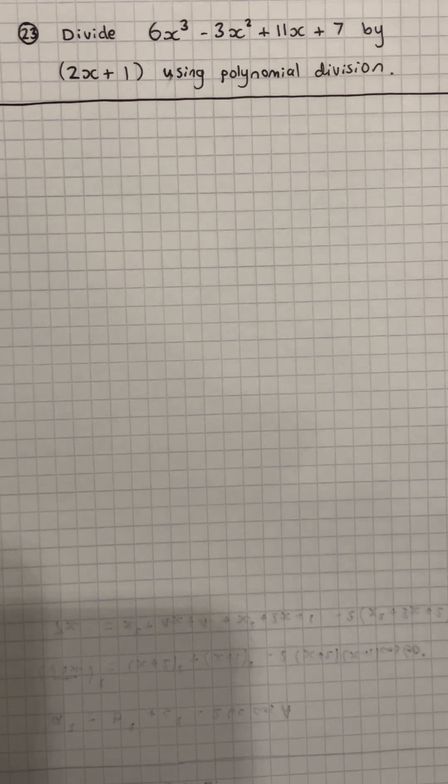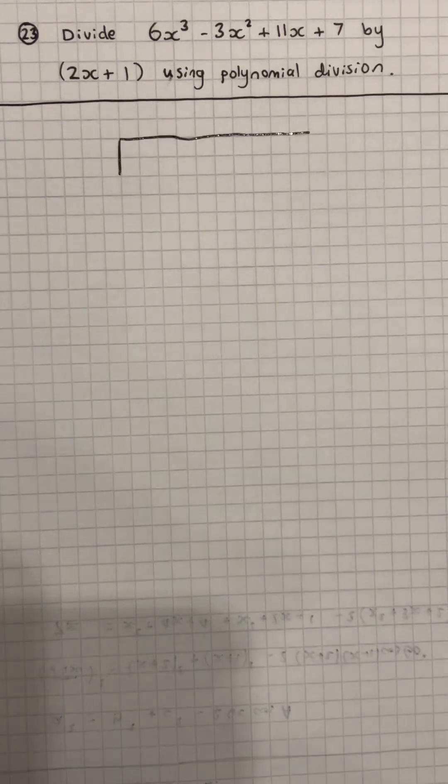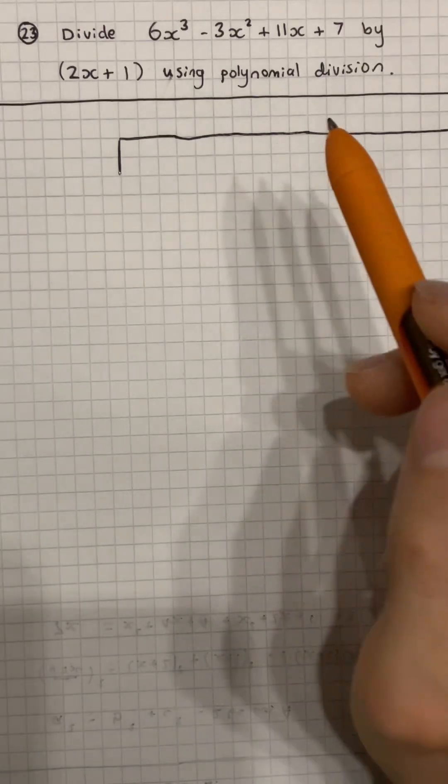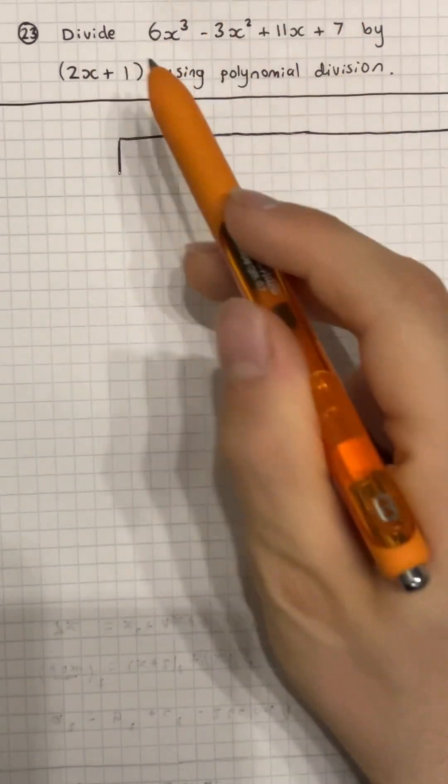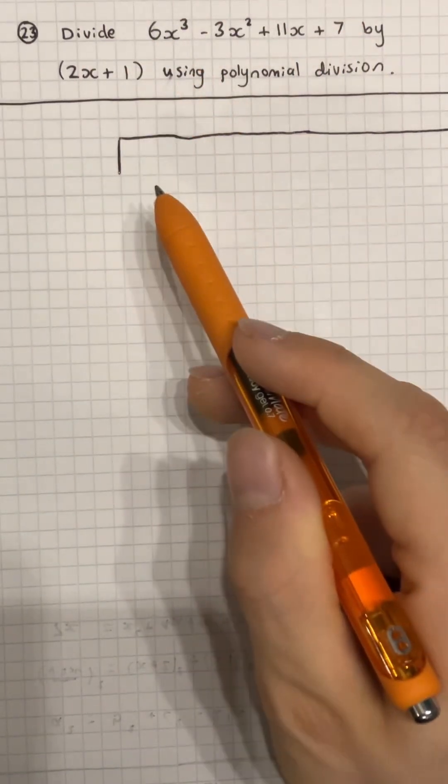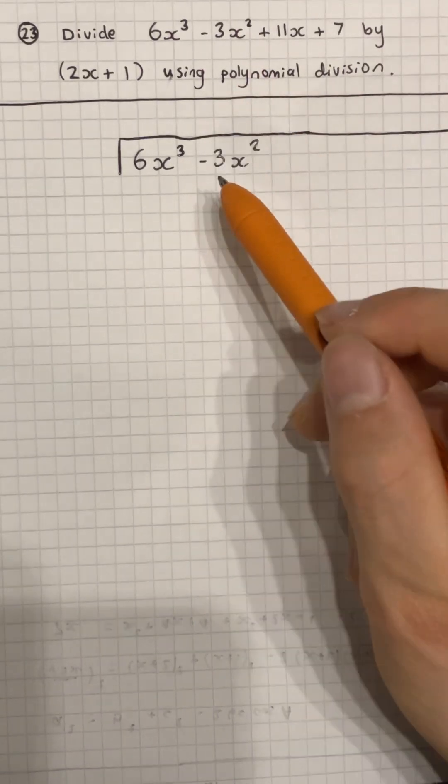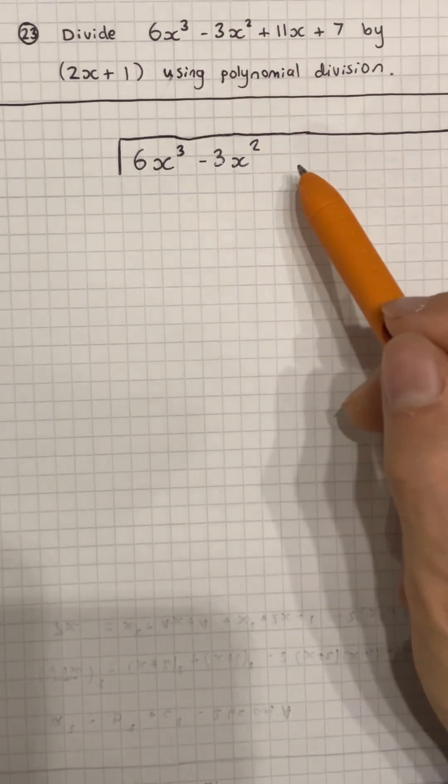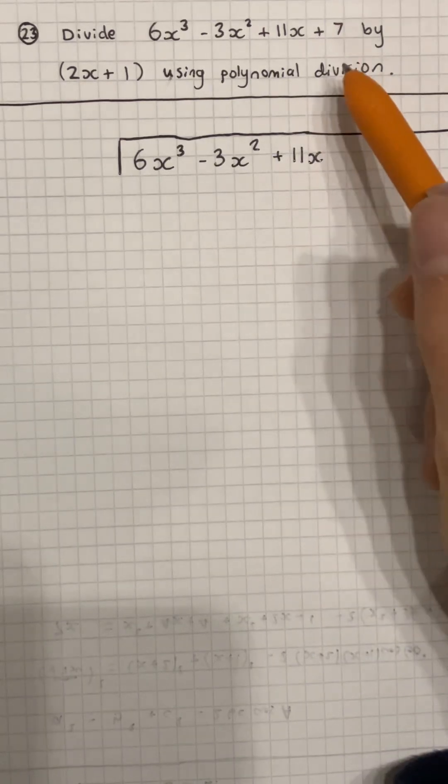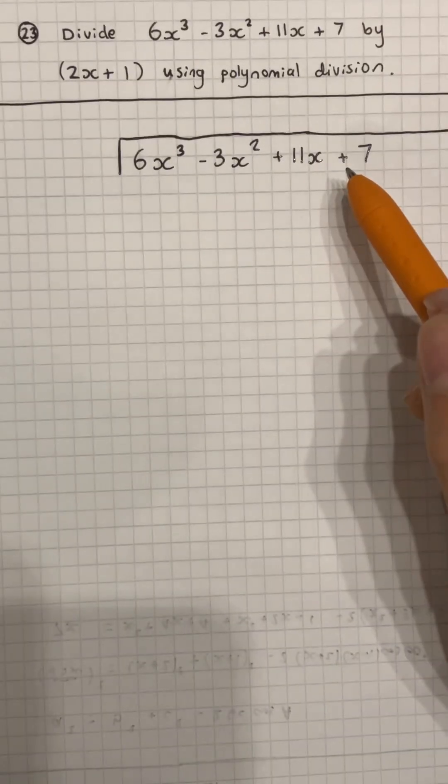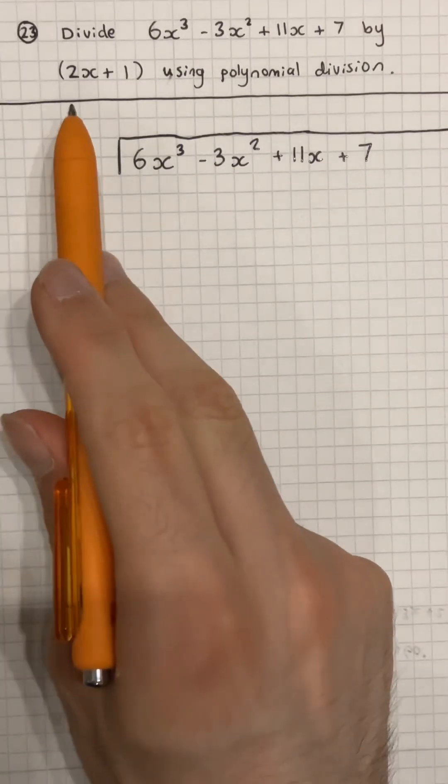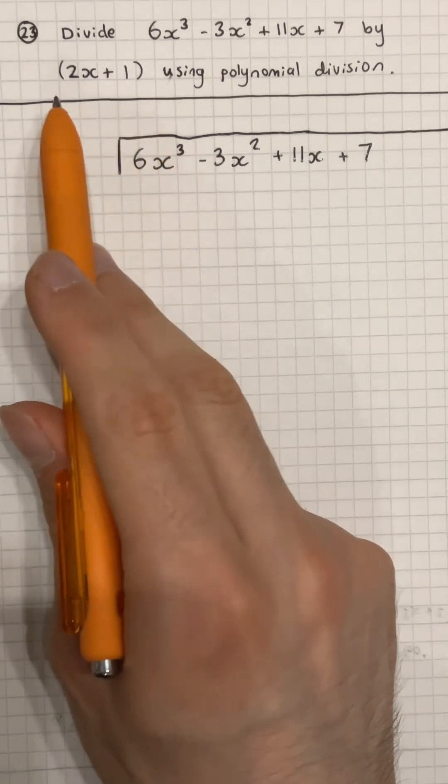As we're dividing, we're going to set up a bus stop, and we're going to take the first polynomial and put it into the bus stop. Then we're going to take the smaller polynomial and put it on the outside, like this.